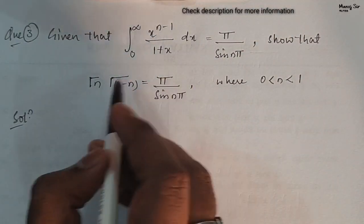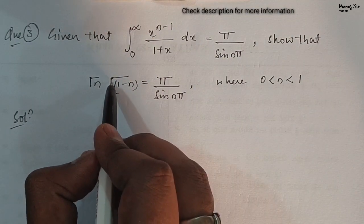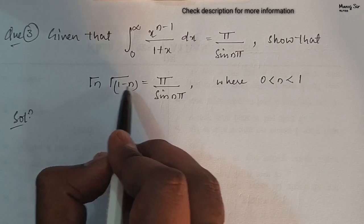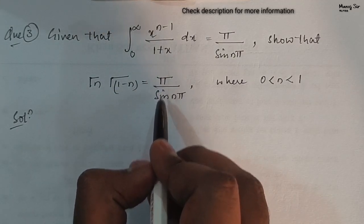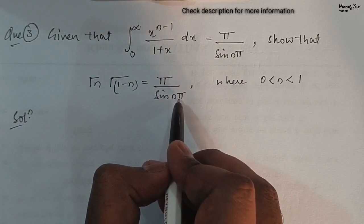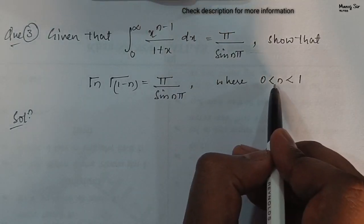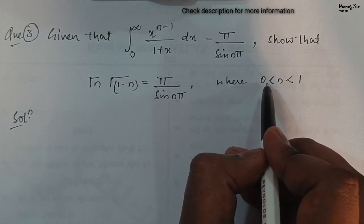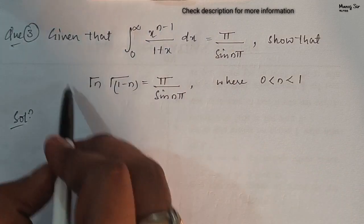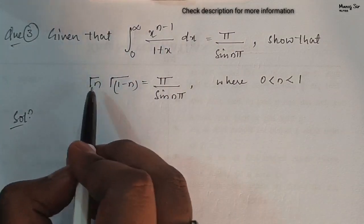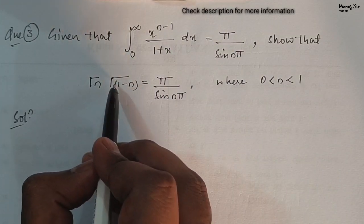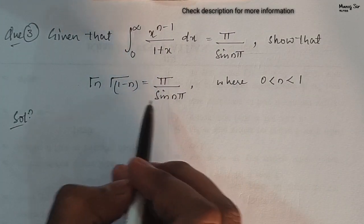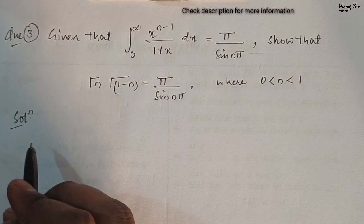We need to prove that gamma(n) times gamma(1 minus n) is equals to pi upon sin(nπ), where the value of n is greater than 0 and less than 1. So let us start.